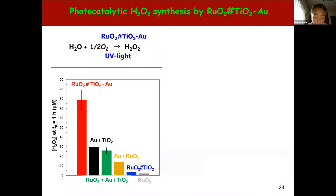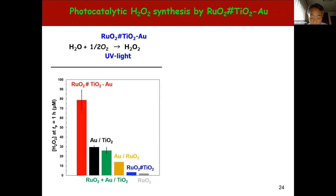This bar graph compares the concentration of hydrogen peroxide generated after one hour irradiation in various systems. In the Au/ruthenium oxide system, about 15 mM hydrogen peroxide is generated, while ruthenium oxide and ruthenium oxide/TiO2 are almost inactive. Au/TiO2 exhibits much higher photocatalytic activity than Au/ruthenium oxide, yielding about 30 mM hydrogen peroxide. Strikingly, the ruthenium oxide/TiO2/Au three-component system exhibits photocatalytic activity far exceeding that of Au/TiO2, affording about 80 mM hydrogen peroxide.